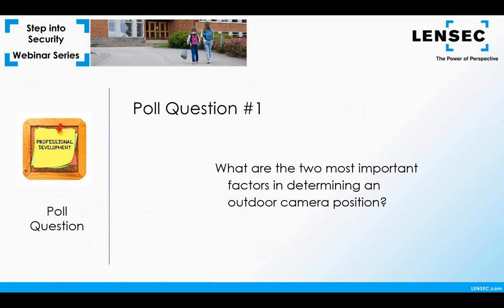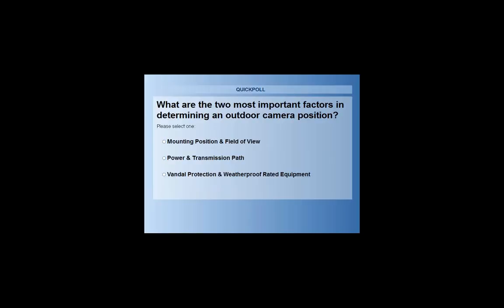Now we'll come to our first poll question: what are the two most important factors in determining an outdoor camera position? The answer choices are: mounting position and field of view; power and transmission path; vandal protection; and weather-proof rated equipment. There are many variables that come into play when you're looking at a camera position, and we're going to go over all of these in the presentation. However, not all the variables are equal.